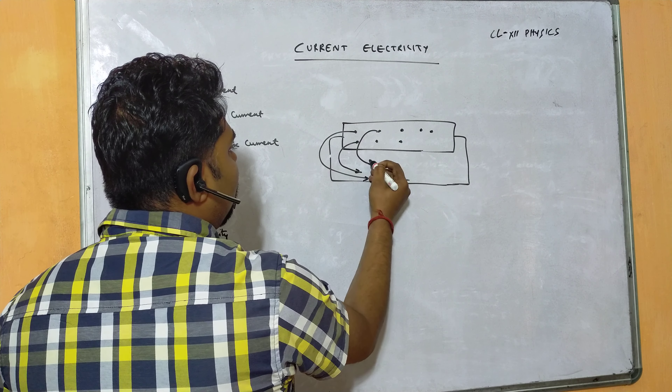Thermal velocity: like gas molecules in a container, conduction electrons inside a conductor move randomly in all possible directions with a certain velocity. This velocity is called thermal velocity. The gas molecules move randomly, strike the surface of the vessel, collide with each other, and as temperature increases their velocity also increases.